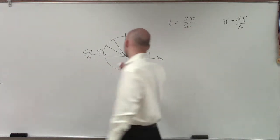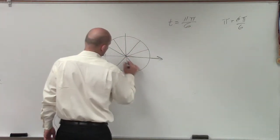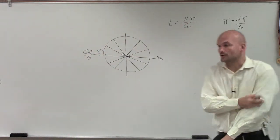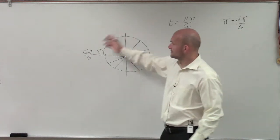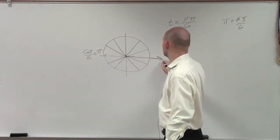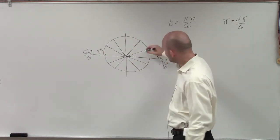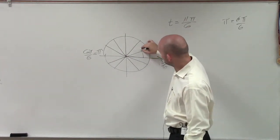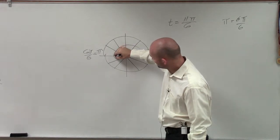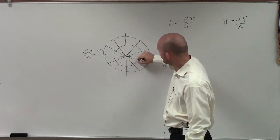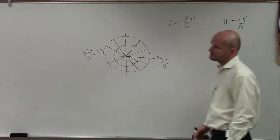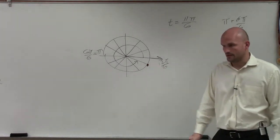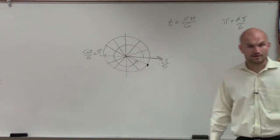Now if I want to do 11π over 6 — hopefully you guys already know it — if this is 6π over 6, all the way over would be 12π over 6. But let's just count them. It's positive, so I'm going to go in the positive direction: 1π, 2π, 3π, 4π, 5π, 6π, 7π, 8π, 9π, 10π, 11π over 6. Now I just need to determine what this point is.